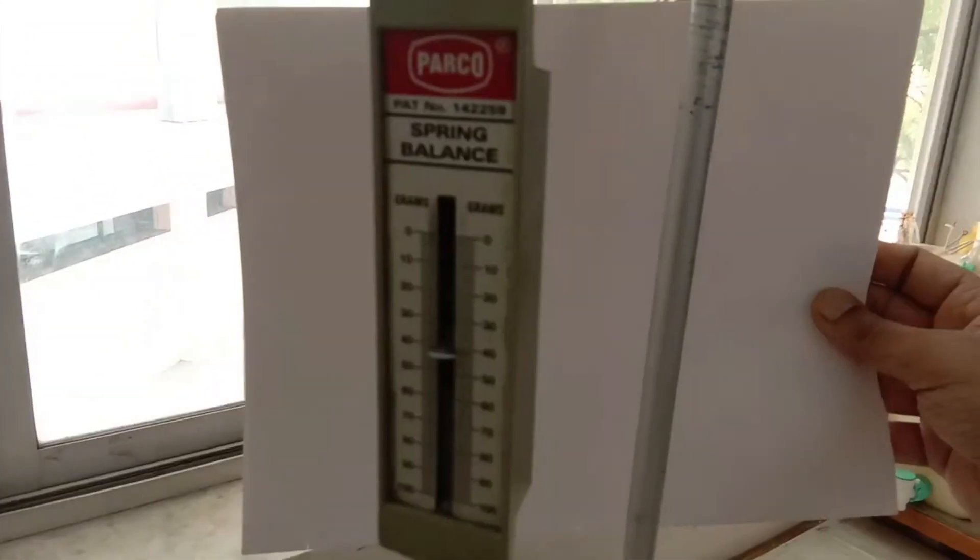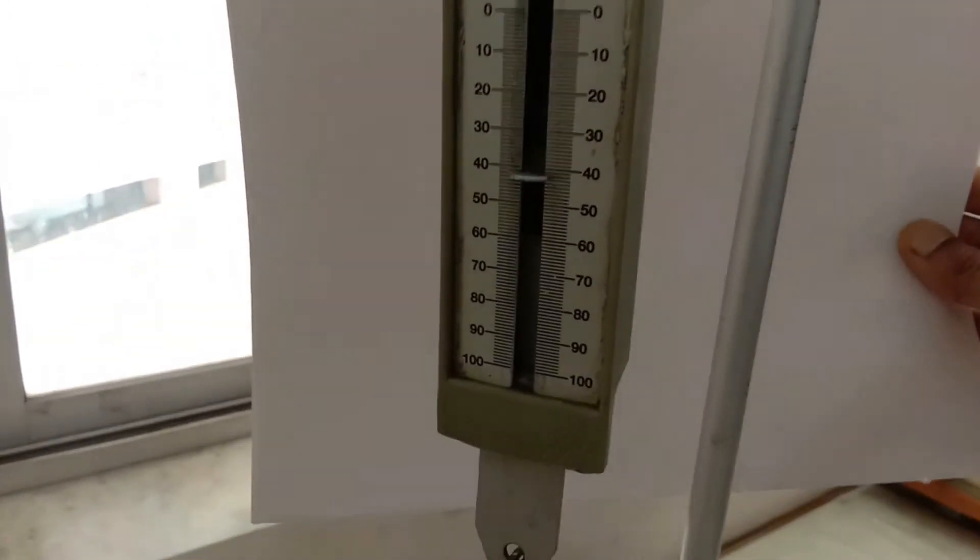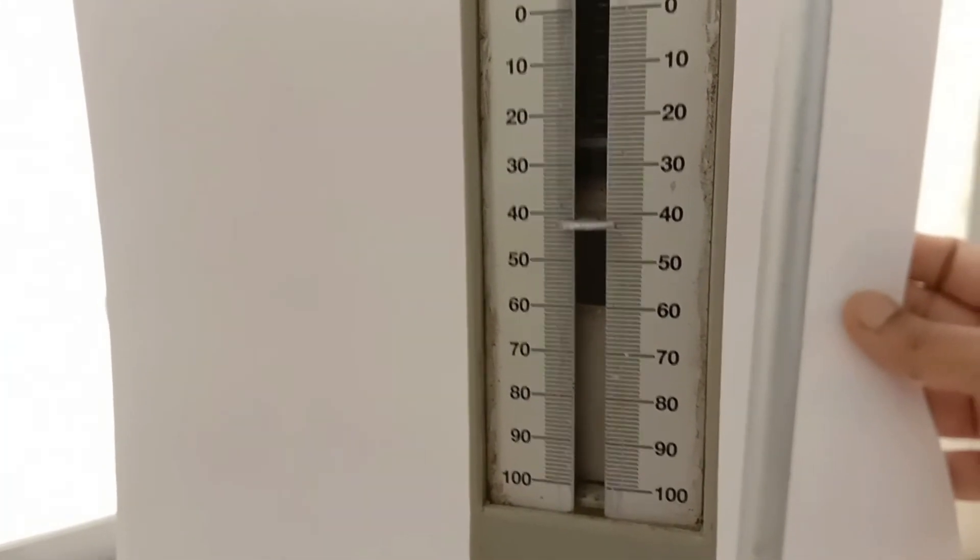We can see that the apparent weight of the suspended object is about 43 gram-force. If you see the reading on the spring balance as 43 grams, it means the weight of the object is 43 gram-force in water.